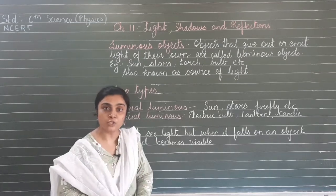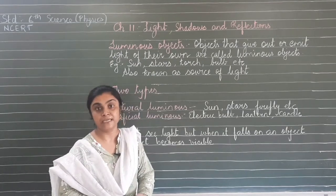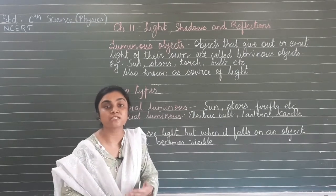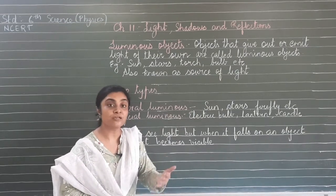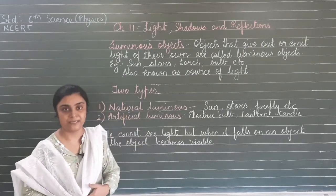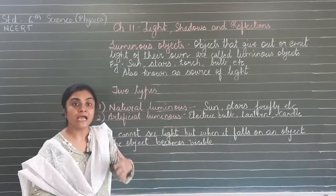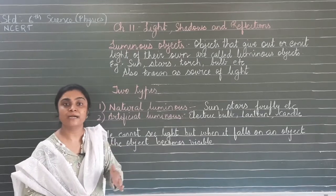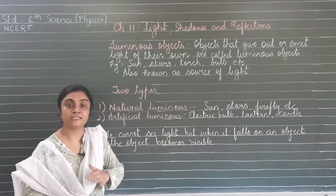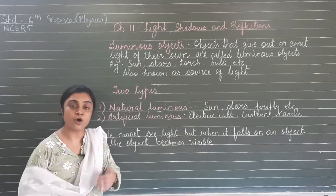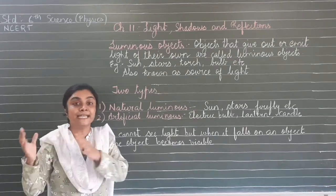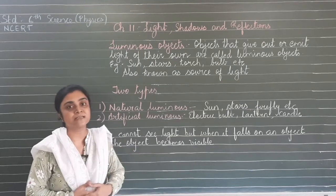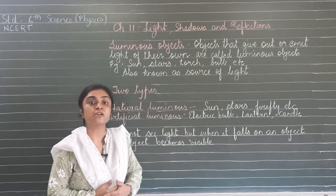Now, you might say that the moon is also a luminous object. But no - the moon is not a luminous object. It is a non-luminous object because it takes the light of the sun. The moon has light and gives us light, but it is not a luminous object because it reflects the light of the sun. So the moon is considered a non-luminous object.